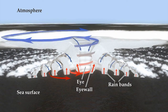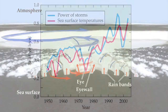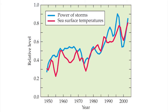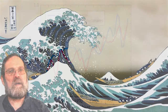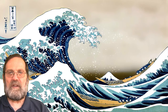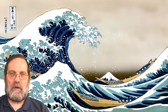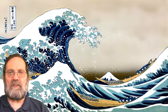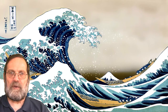Warmer sea surface temperatures and cooler stratosphere temperatures accentuate the temperature gradients that empower major storms. Consequently, major storms are increasing in intensity. Together with rising sea levels, this exacerbates storm surges and threatens coastal communities adjacent to warm ocean currents. Projections about the frequency of major storms, however, remain uncertain because of the complex nature of storm formation and will require additional data and fine-resolution computer modeling.